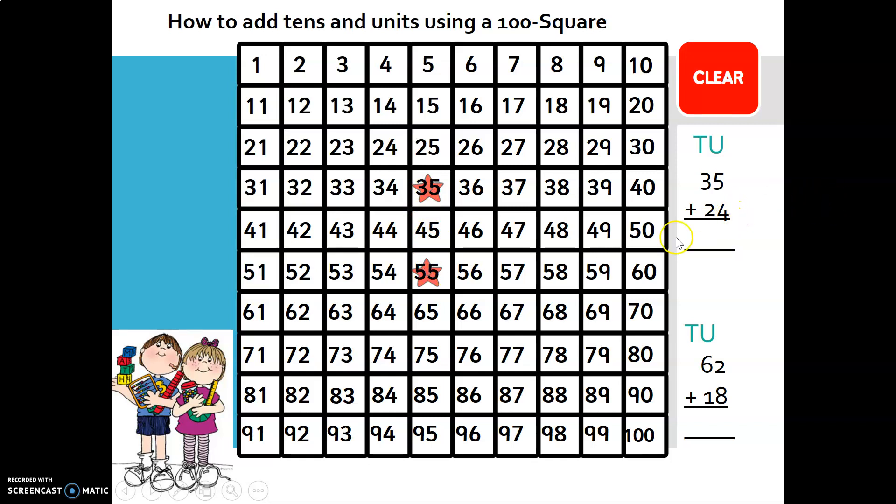Now there are 4 units. So 55 plus 4 units: 1, 2, 3, 4 is 59. 35 plus 24 is 59.